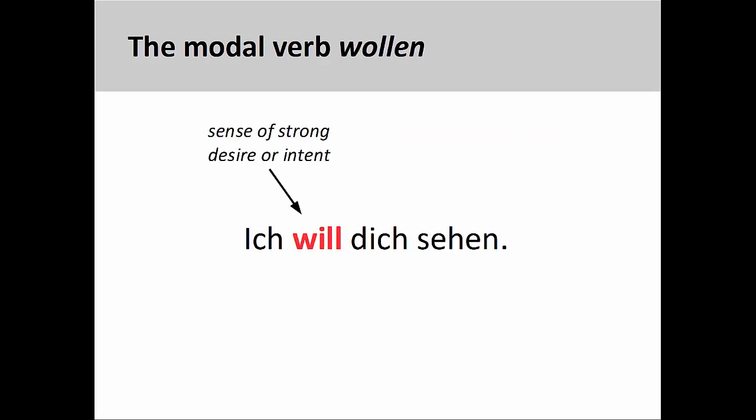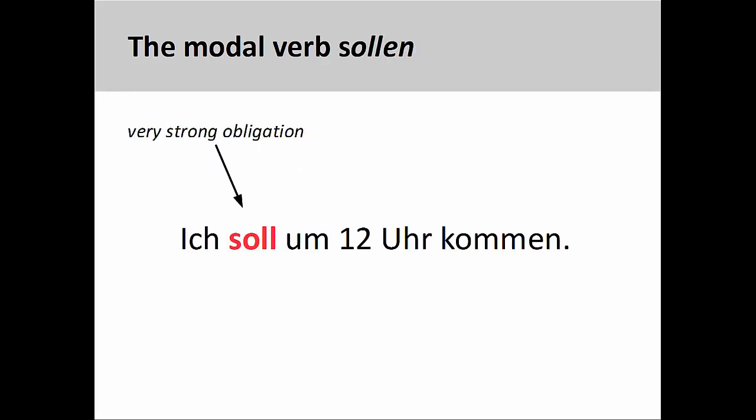The modal verb wollen also indicates desire or intent, but has a much stronger meaning than the modal verb möchten. For example, ich will dich sehen — I want to see you. Finally, the modal verb sollen indicates a very strong obligation, a sense of being supposed to do something. Ich soll um zwölf Uhr kommen — I ought to come at twelve o'clock.